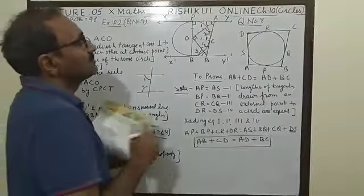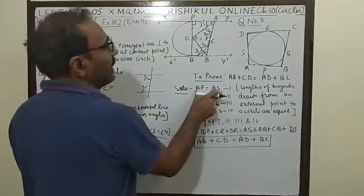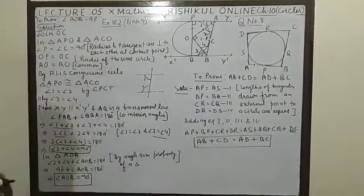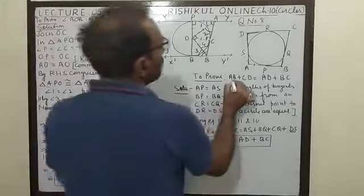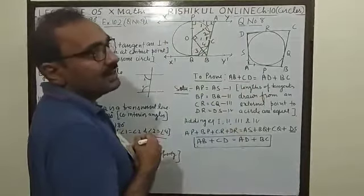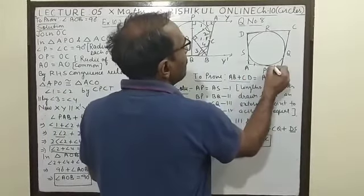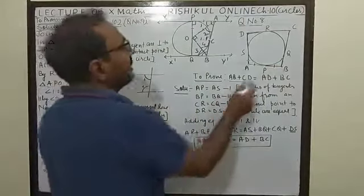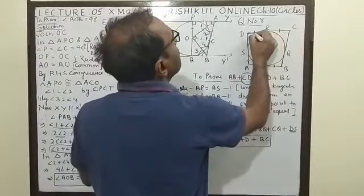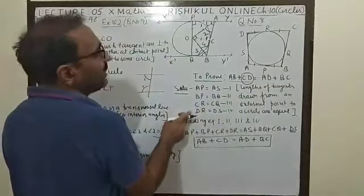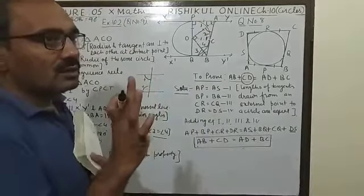How can you prove? Students, you know very well, AB equal to AS. Why? Because length of tangent drawn from an external point to a circle are equal. Students, remember that you have to prove that AB plus CD. So, segments of AB and CD you will put in left hand side. Because when you add together, you will find this one. This you have to remember.